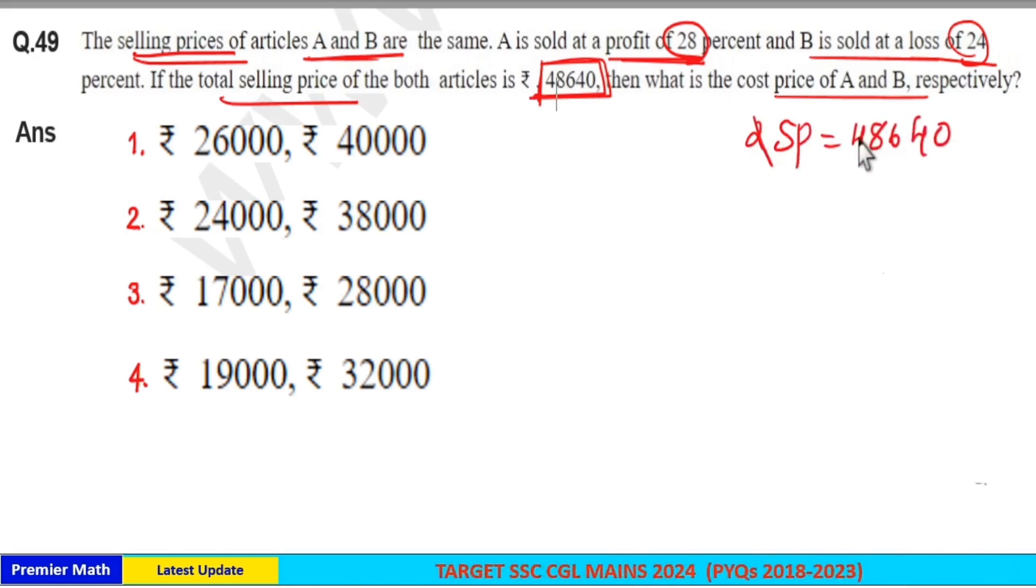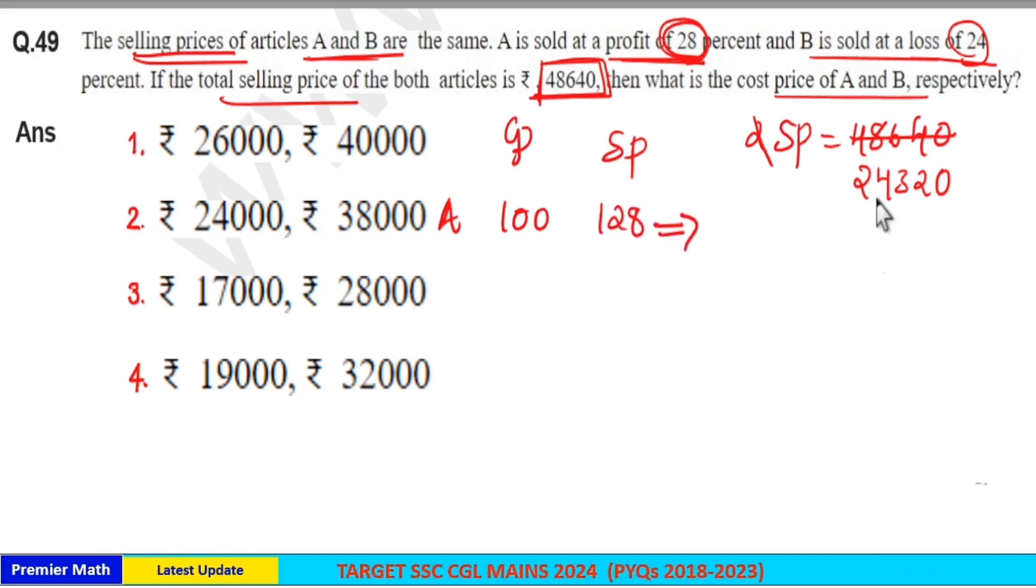Then 1 SP, that is selling price of one article, is equal to 24,320. Now consider cost price of A as 100 rupees. Then selling price of A is equal to - A sold it at a profit of 28% means 100 plus 28 - 128 rupees is the selling price of A. And here this 128 rupees is given as 24,320.